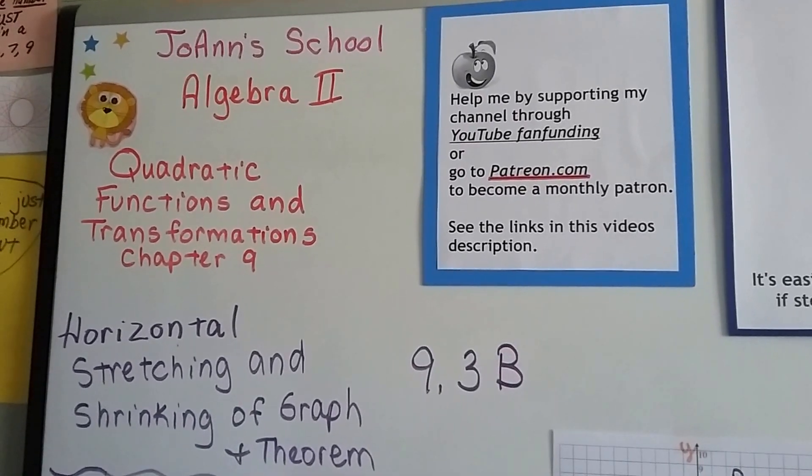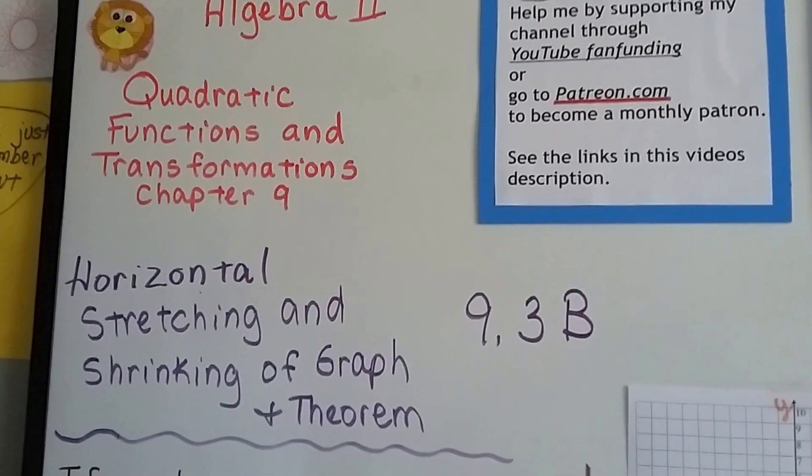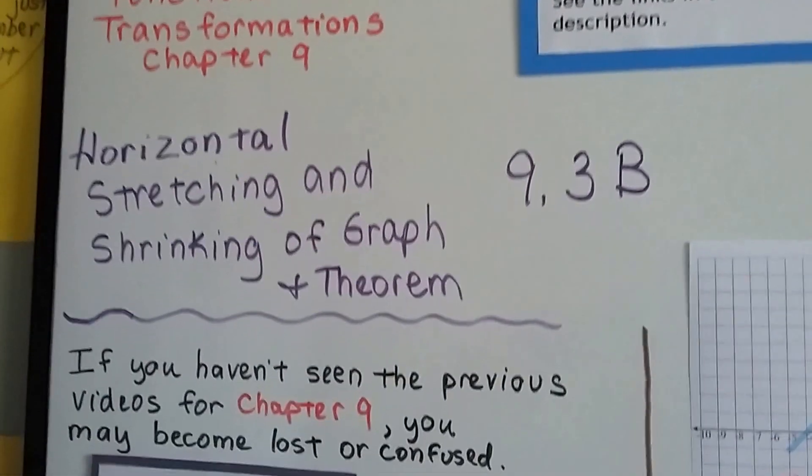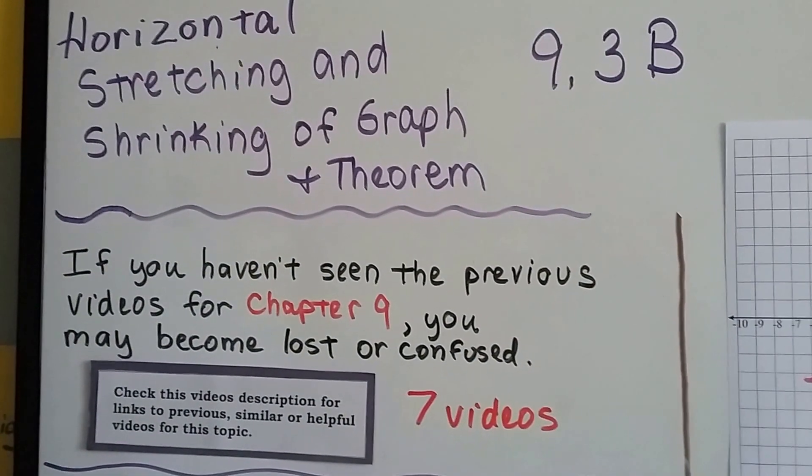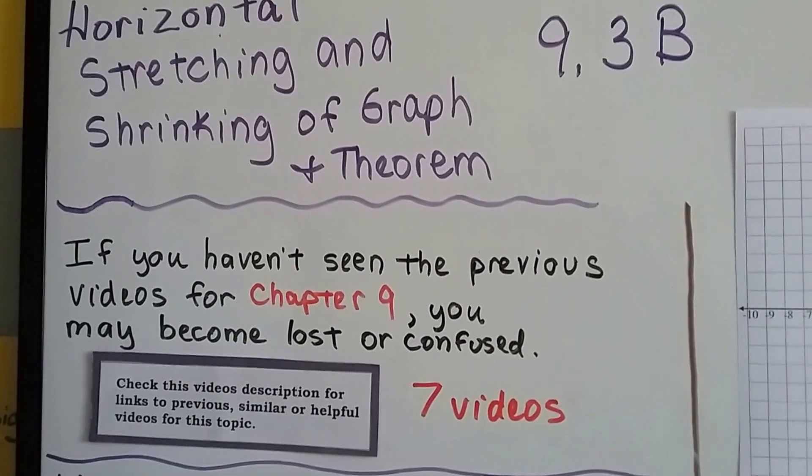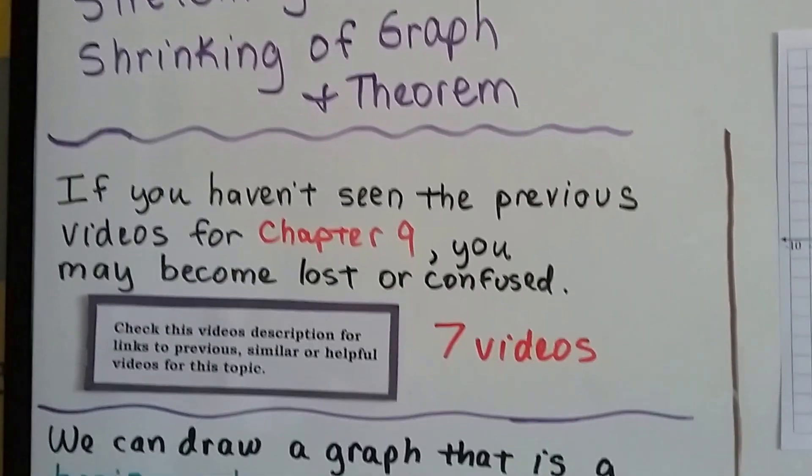We're in Algebra 2, 9.3b, and we're going to discuss horizontal stretching and shrinking of a graph, and I have a theorem. Now if you haven't seen the previous videos for chapter 9, we're up to seven of them, you can click this video's description and watch those, and that'll hopefully clear up any confusion. You can also try watching the video again.